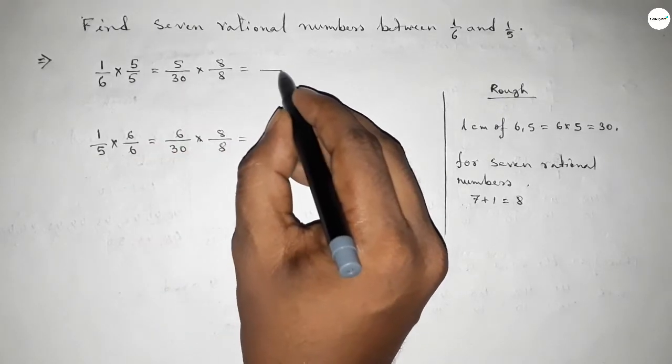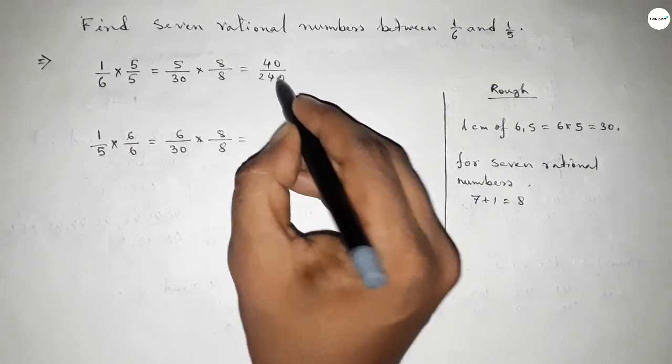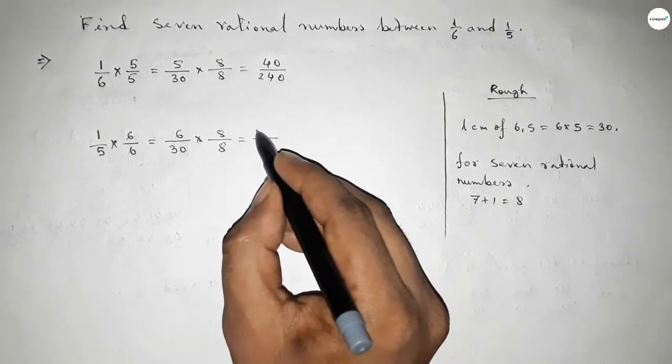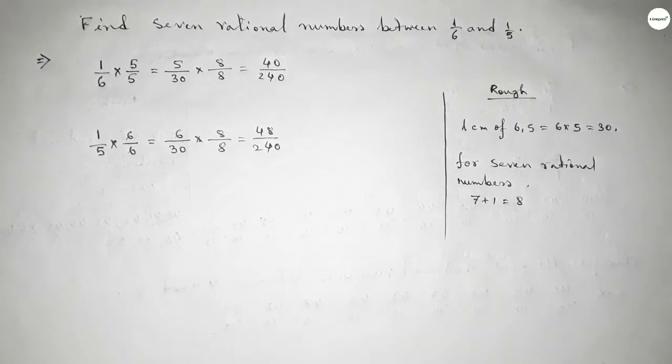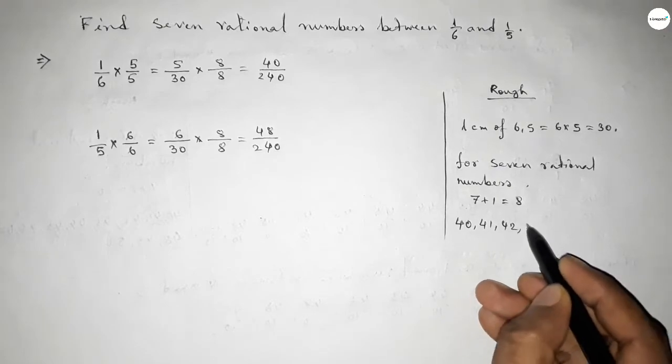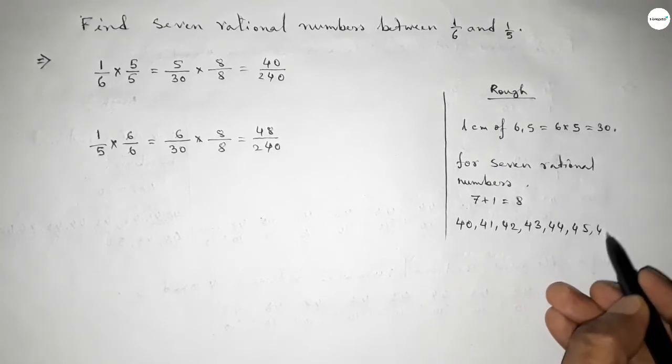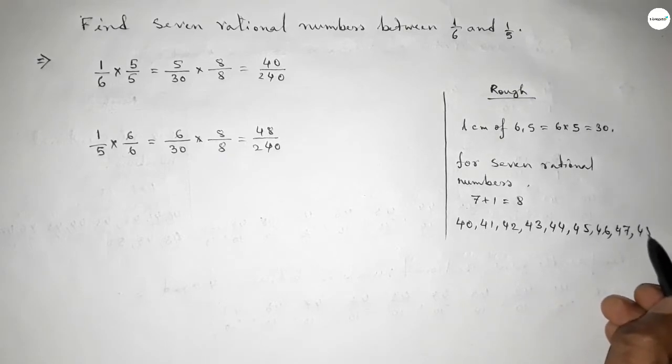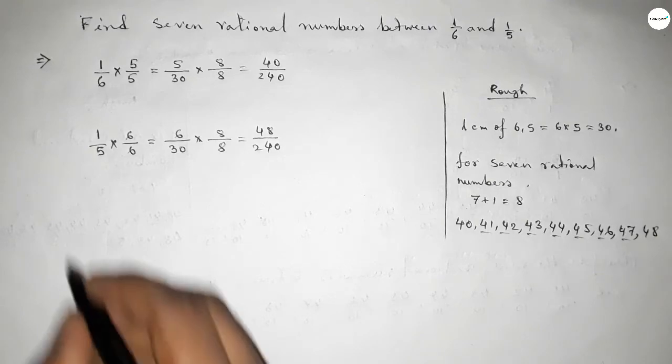This is 40 over 240 and this is 48 over 240. Now between 40 to 48 we can get seven natural numbers, and by these natural numbers we can form seven rational numbers.